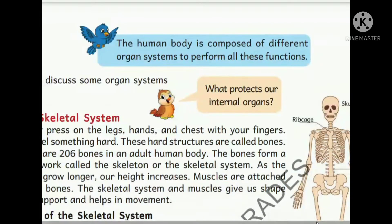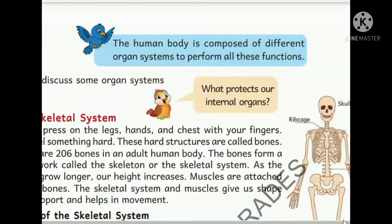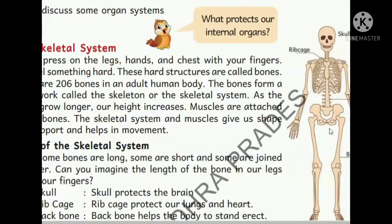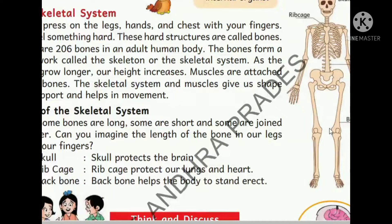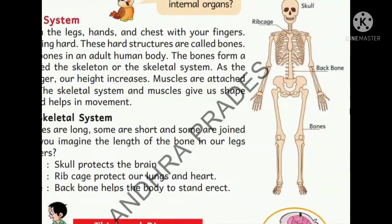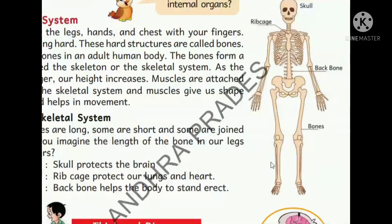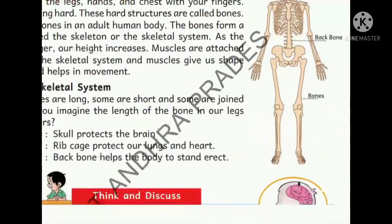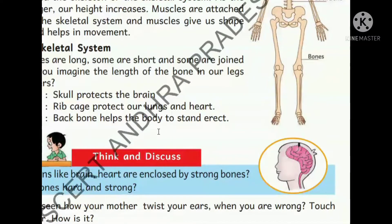The skeleton is made of many types of bones in our body. Just touch your hand, legs, or toes. Do you feel a strong structure? Yes, that is called bone. We have 206 bones in our body. Some bones are long, some are short, some are smooth, some are very hard.